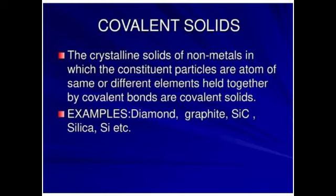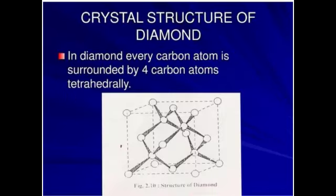Looking at diamond crystals — they are made purely from carbon atoms. In diamond, every carbon atom is surrounded by four other carbon atoms with the help of a covalent bond, forming a tetrahedral structure — 'tetra' meaning four, 'hedral' referring to edges. In diamond, one carbon is bonded to four more carbon atoms via covalent bonds. Diamond is considered the strongest substance and the world's strongest crystal.